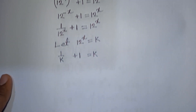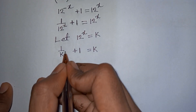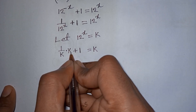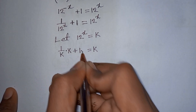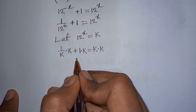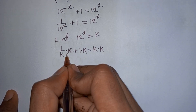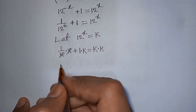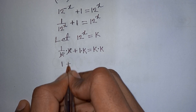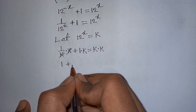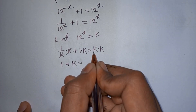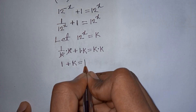We multiply both sides by k. This k will cancel on the left, giving us 1 plus k equals k squared.